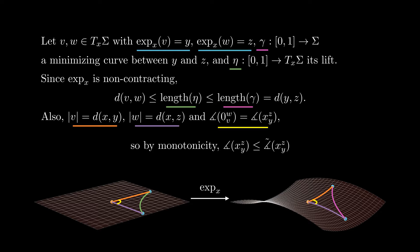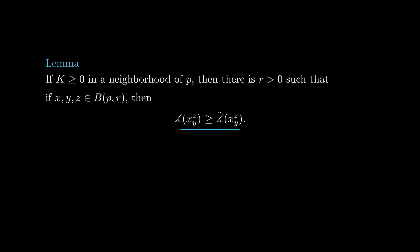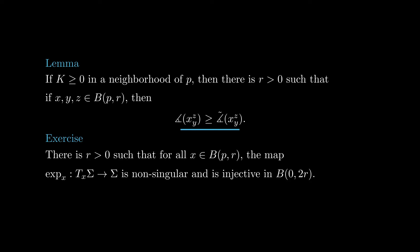Now we focus our efforts on the second part, the one about non-negative curvature. The first ingredient is a local version. For a surface sigma, if its curvature is non-negative in a neighborhood of a point p, then there is a neighborhood for which the conclusion of the theorem holds. That is, there is a radius r for which any triangle xyz inside the ball of radius r around p satisfies that the angle at x is greater than or equal to the comparison angle at x. We need to find an r small enough so that at any point x in the ball of radius r around p, the exponential map at x is injective and has non-singular derivative at each point in the ball of radius 2r around the origin. This is not very hard, and I leave it as an exercise for those familiar with the general theory of ordinary differential equations.